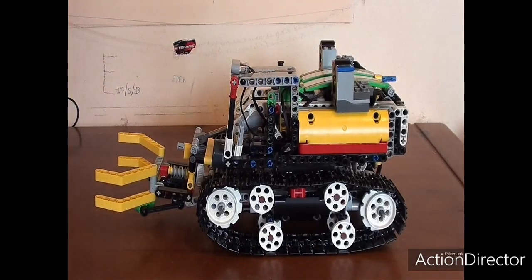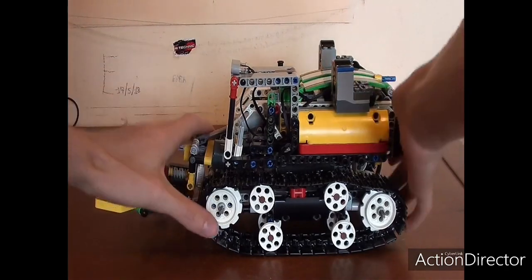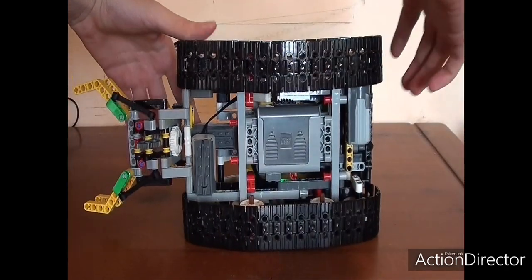In this robot we have two motors that serve to move the tracks. These are type M motors.